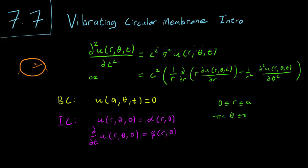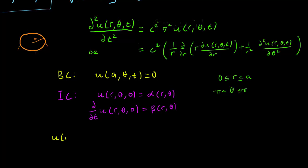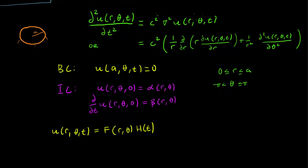We begin, as we did before, by considering product solutions. Let's write u(r,θ,t) as F(r,θ) times H(t). This initially works the same way as in the rectangular vibrating membrane equation. We get H''(t) = -λc²H(t) for the time variable.